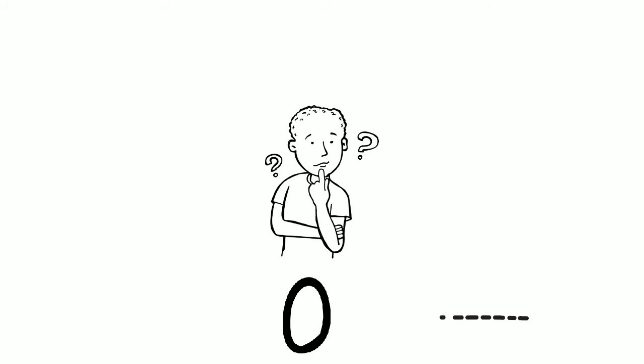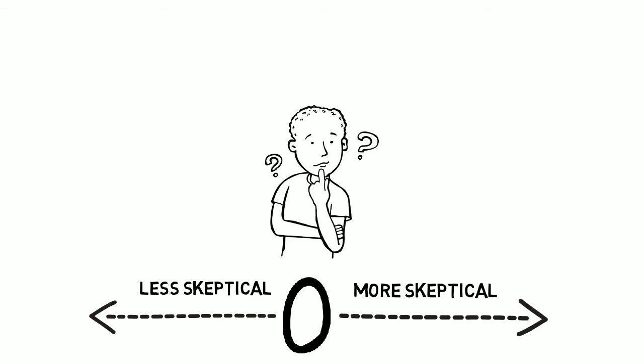Once you've gotten a sense as to whether or not there's a pattern in your responses, you'll be better able to locate yourself on the spectrum of skepticism. And once you do this, you can reflect on the extent to which you think that your skeptical inclinations are rational and virtuous.